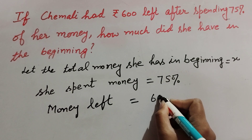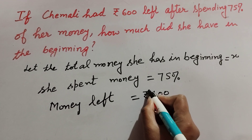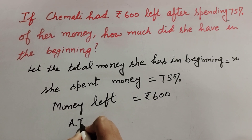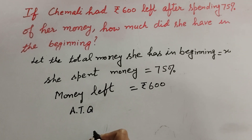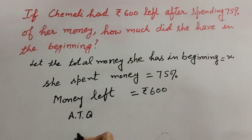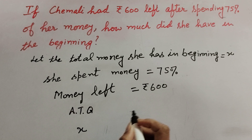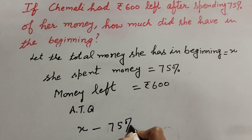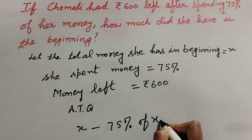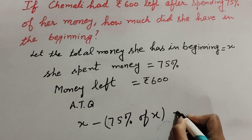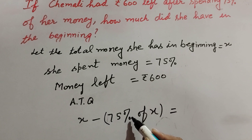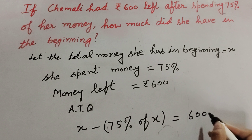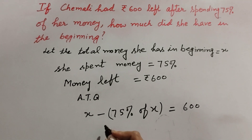So according to the question, total money in the beginning is x, and she spent 75% of x. So we write: x minus 75% of x equals 600. She has total money x, spent 75% of x, and the left money is RP 600.